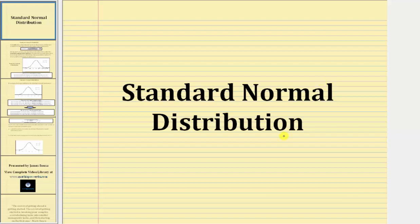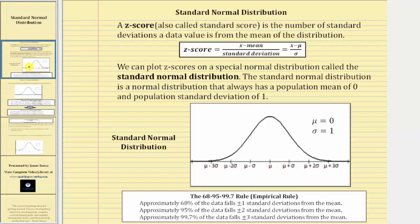Welcome to a lesson on the standard normal distribution. To begin, a z-score, also called a standard score, is the number of standard deviations a data value is from the mean of the distribution.